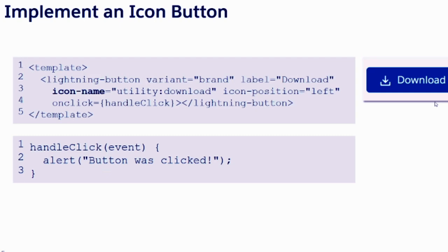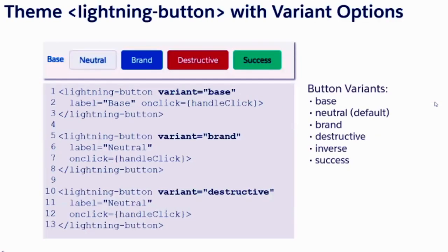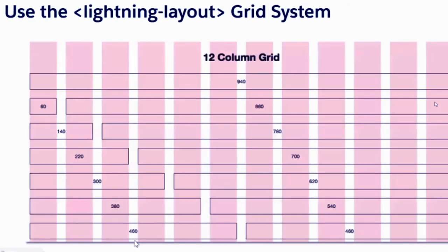We have already worked with buttons. Now we are going to work with the icon button. You provide the icon name, the style of the button, and the label on the button. If you click on a button you can perform any action on click. There are different variants available: base, neutral, brand, destructive for red color, green color for success — different kinds of buttons you can build. You just mention the variant and the color theme will happen automatically.